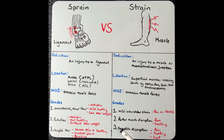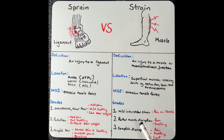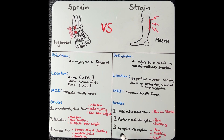Coming across to strains: at grade one, you will see a mild interstitial strain within the muscle itself, and pain will only be brought on when the muscle is stretched. At grade two, there'll be some partial muscle disruption, leading to pain and swelling at that muscle. Whilst at grade three, there's a complete disruption of the muscle, leading to pain, swelling, and loss of function.